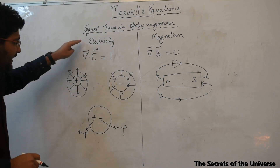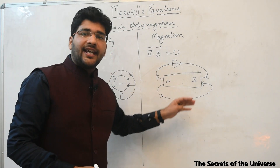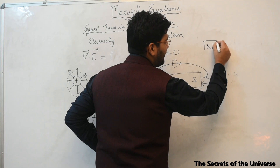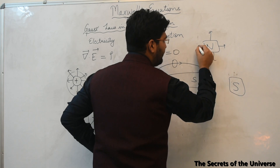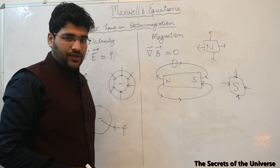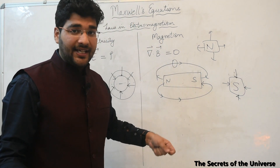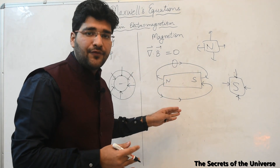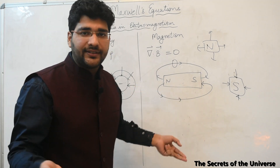Since the divergence of the magnetic field is zero, this is Gauss's law in magnetism. Unlike electricity where positive and negative charges can exist separately, north and south poles cannot exist separately. This means there can be no magnetic monopoles. Even if you cut a magnet into two halves, you won't have separate north and south poles — you'll have two magnets each with their own pair of north and south poles.